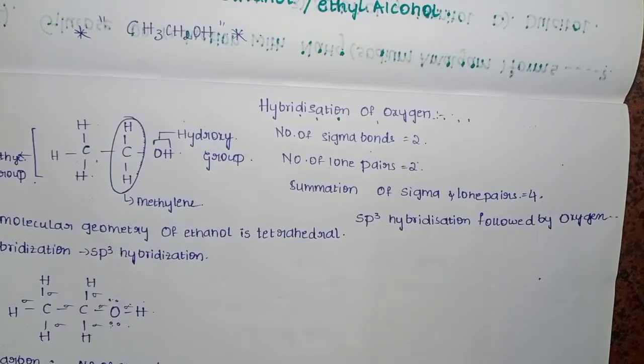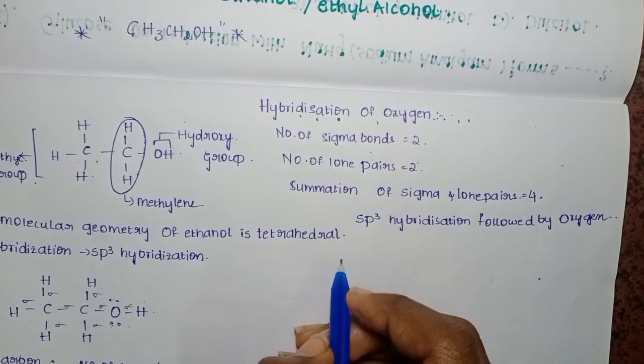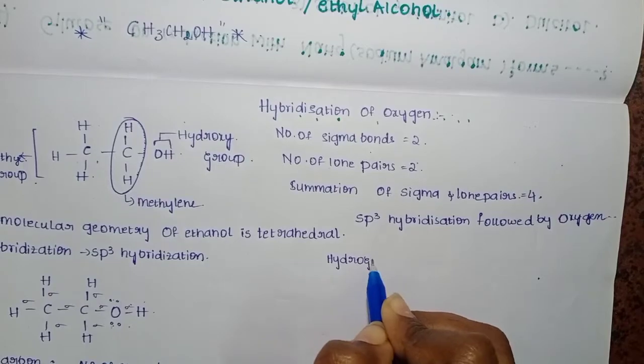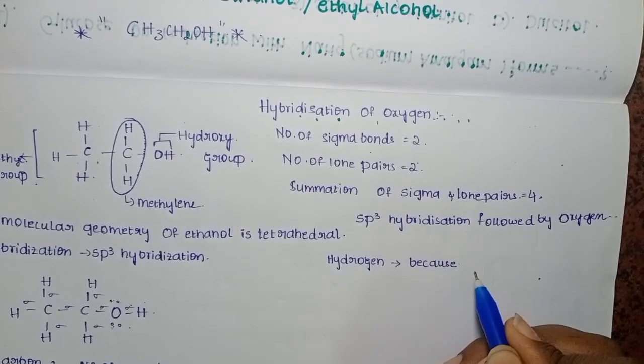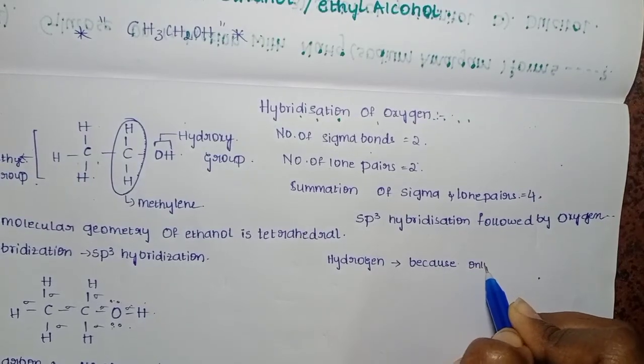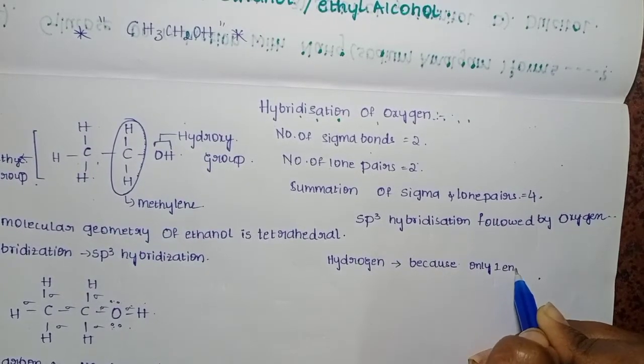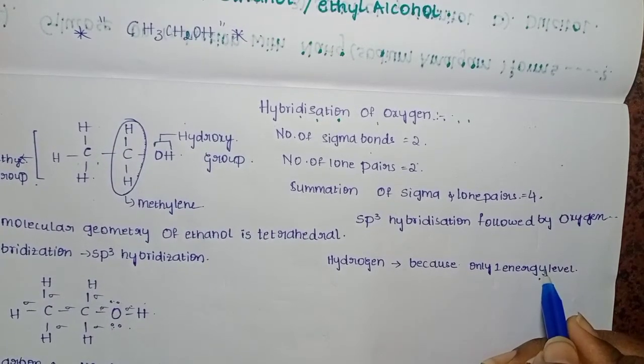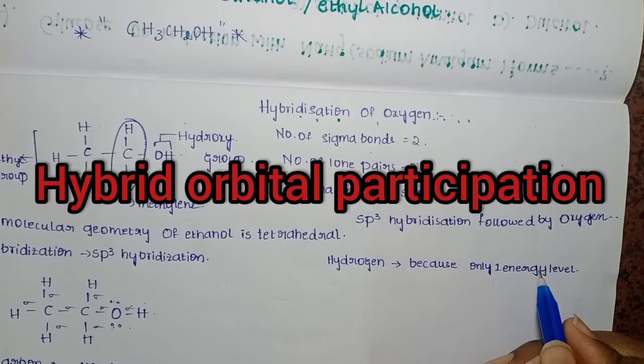Hydrogen is at a lower energy level. Hydrogen cannot participate in the hybridization because it consists of only one energy level, so it cannot participate in the hybridization.